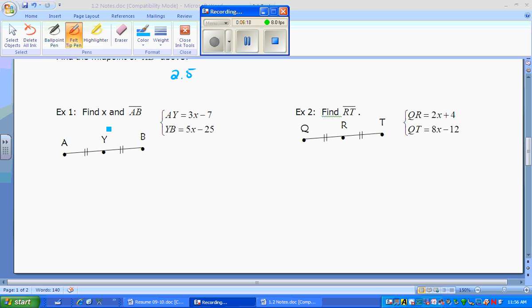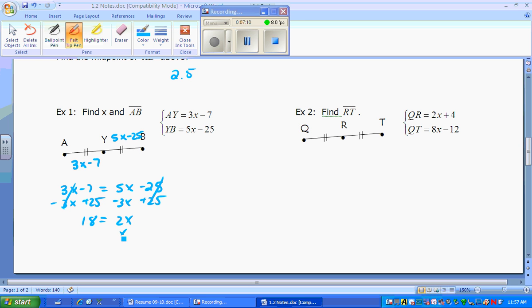Now let's go into the examples. In example 1, we want to find X and the length of AB. Well, looking at the picture, we know that A, Y, and B are collinear because they're on the same line. Y is the midpoint because A, Y, and Y, B are marked to be congruent to each other. So if we take our example and we say, okay, well, 3X minus 7, that is what A, Y is, and Y, B over here is 5X minus 25. Well, what we can do is say, ooh, they are congruent to each other, so we can set 3X minus 7 equal to 5X minus 25 and solve for X. Minus the 3X over, at the same time, you can move the 25, adding it to the opposite side, giving you that 18 is equal to 2X, so X equals 9.